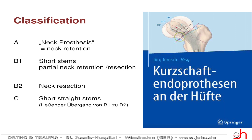Professor Jeros from NEWS has already made some considerations about this topic. He made a classification from A to C. Type A are very proximally fixating prostheses. Type C are short straight stems with an almost diaphyseal fixation. And in between we have short stems, especially type B1 with partial neck retention or neck resection.